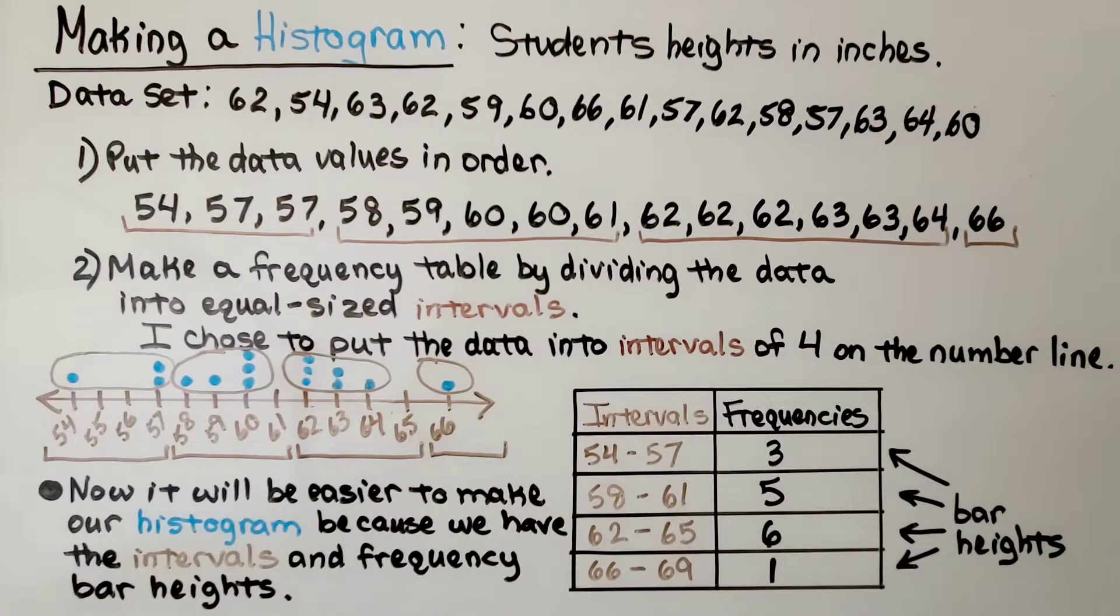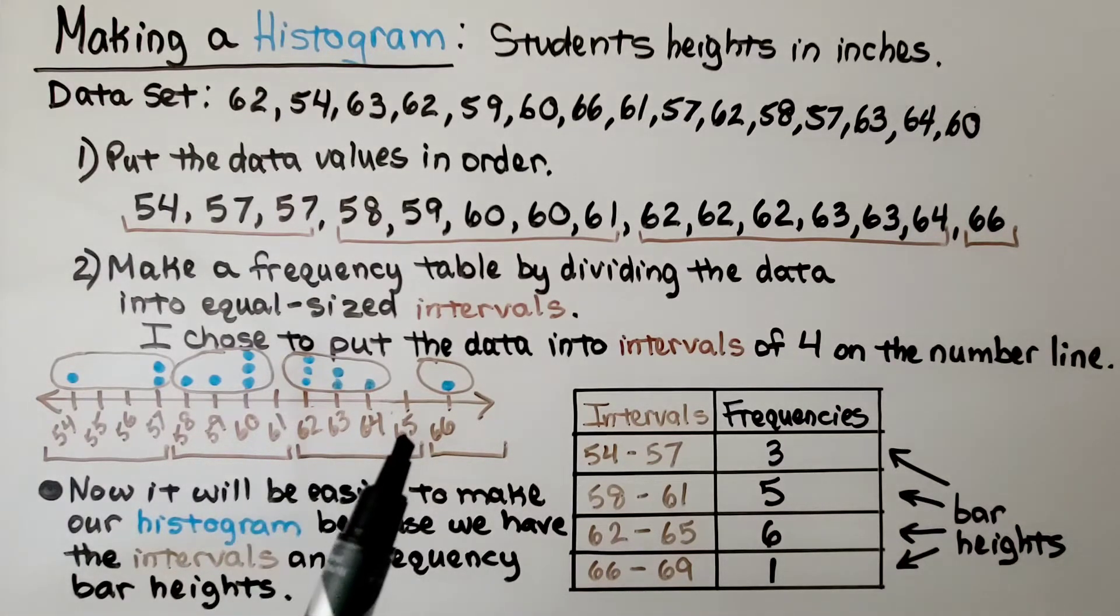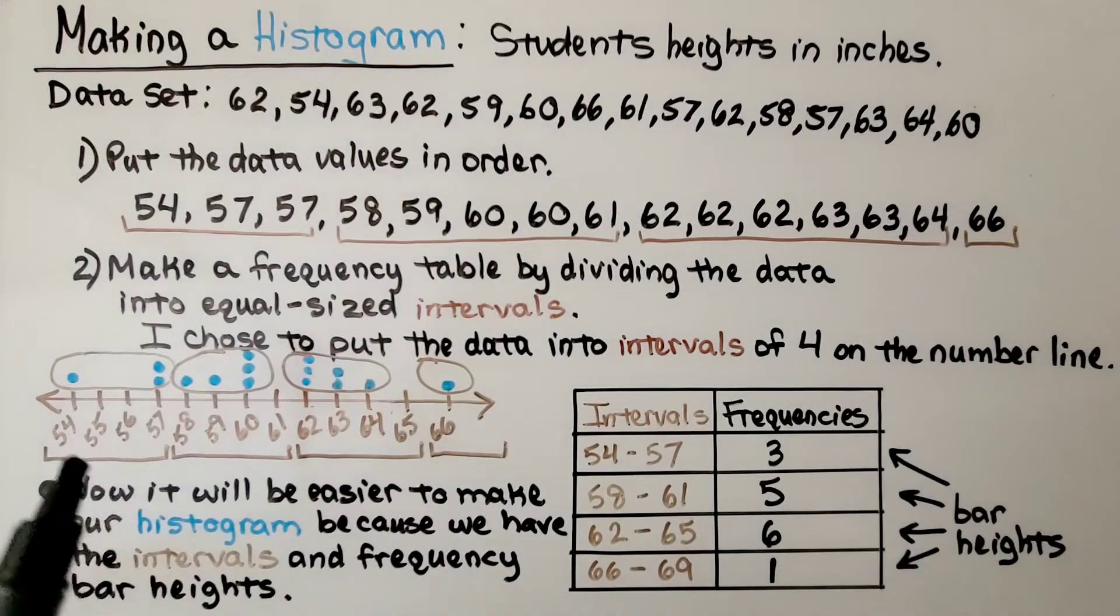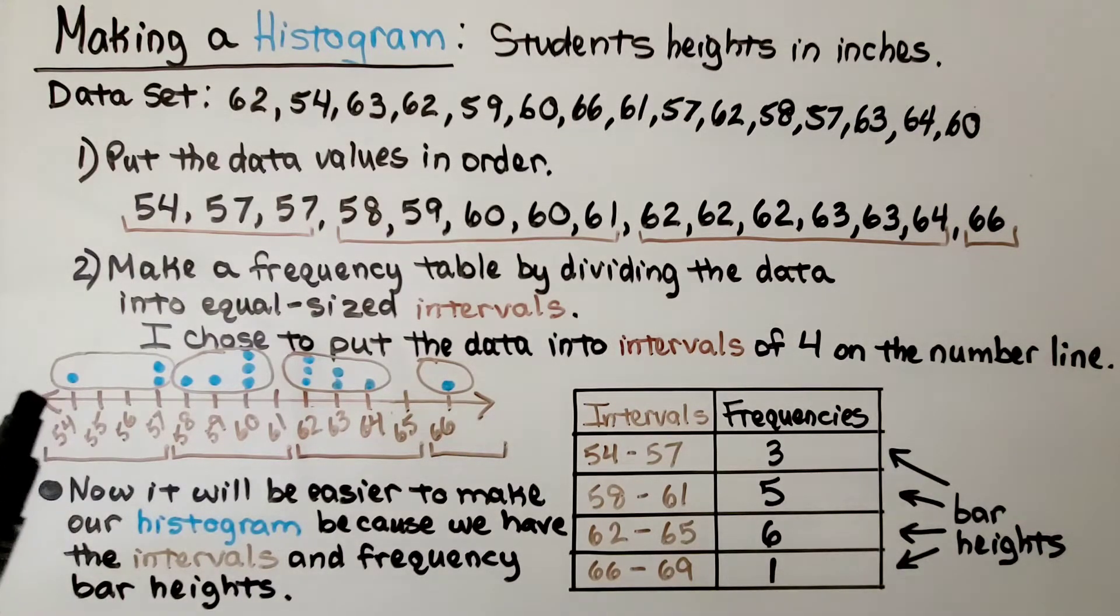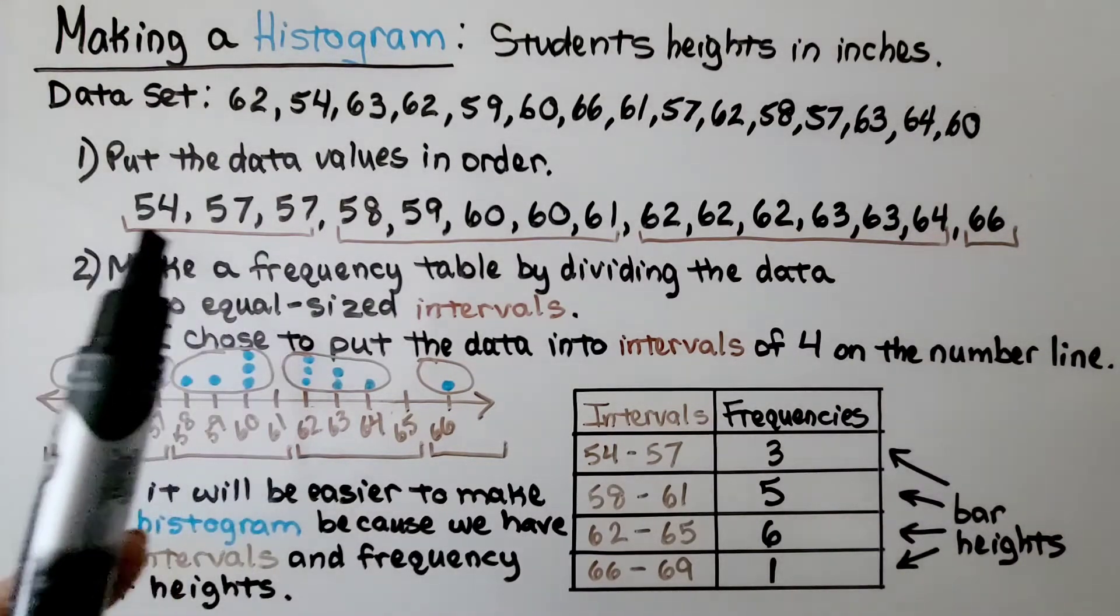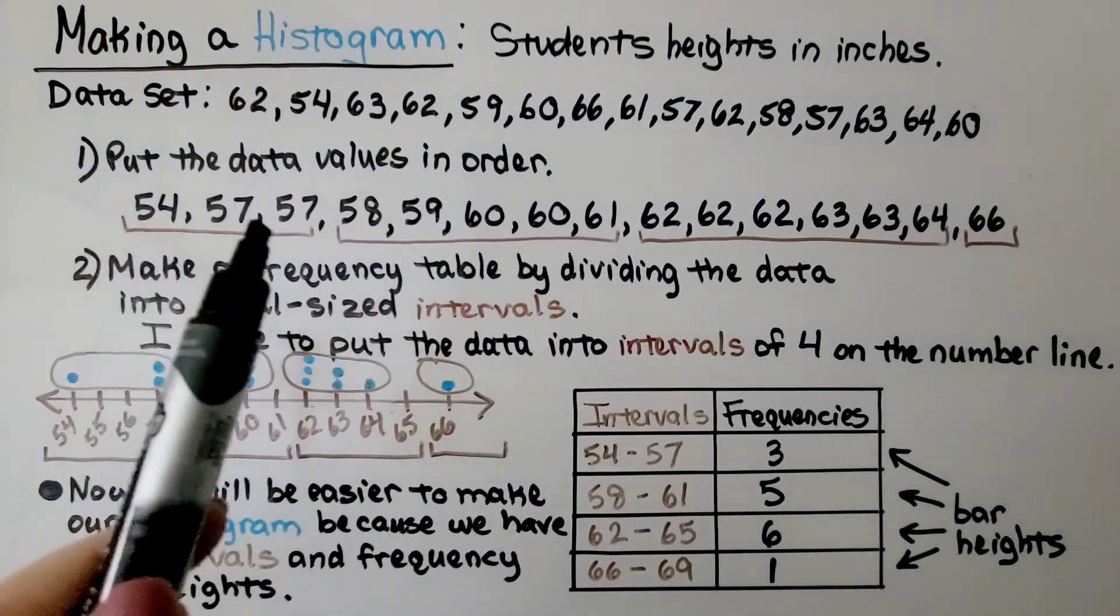Now we make a frequency table by dividing the data into equal-sized intervals. I chose to put the data into intervals of 4 on the number line. We make our frequency table and write those intervals. We have 54 to 57, 58 to 61, 62 to 65, and 66 to 69. Using a dot plot, it's easy to see that there are 3 values for 54 to 57. We could also count them in our line in order.